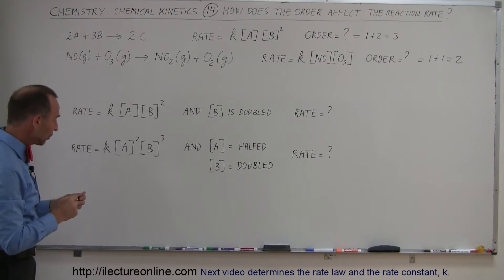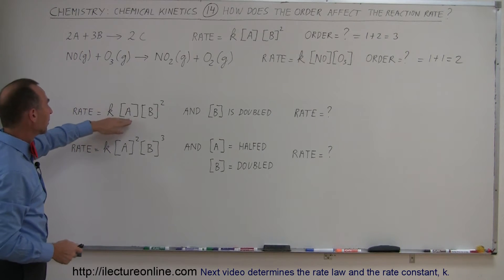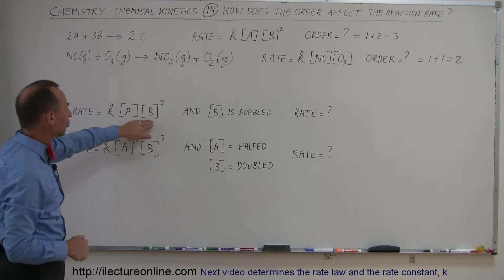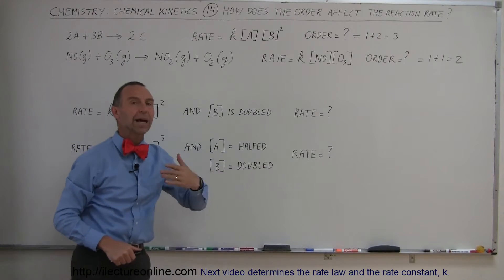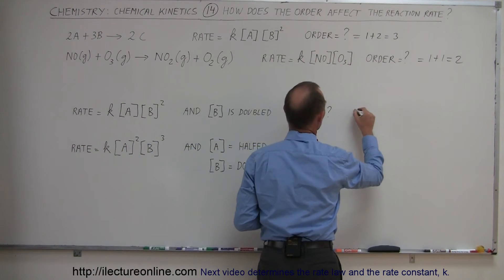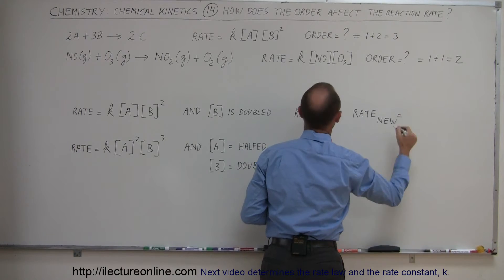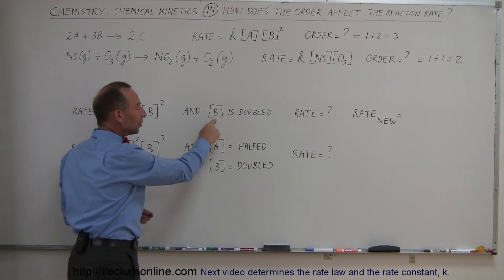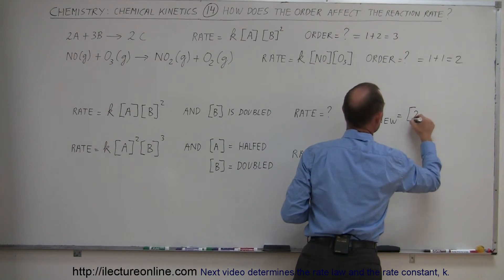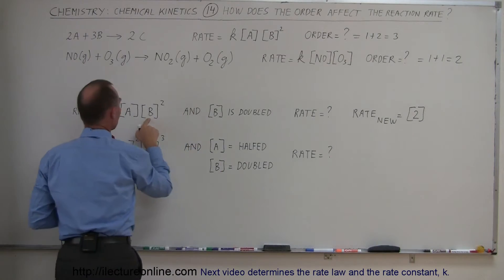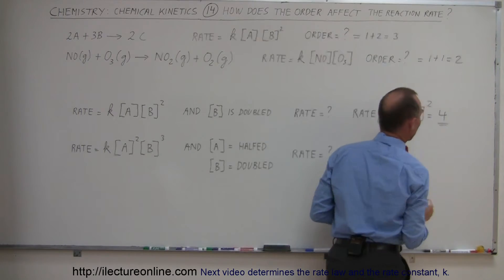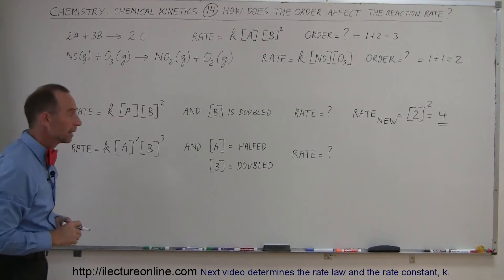Now let's say that we have an equation whose rate is equal to K times the concentration of A times the concentration of B squared. And the concentration of B is doubled, how does it affect the rate, the reaction rate of that reaction? What we do then here is to say that the new rate is equal to, now since we took the concentration of B and doubled it, we then write a 2 for the doubling. And since the concentration of B is squared, it has order 2, we have to square that number, and so we get 4, which means the reaction rate will be 4 times as high.